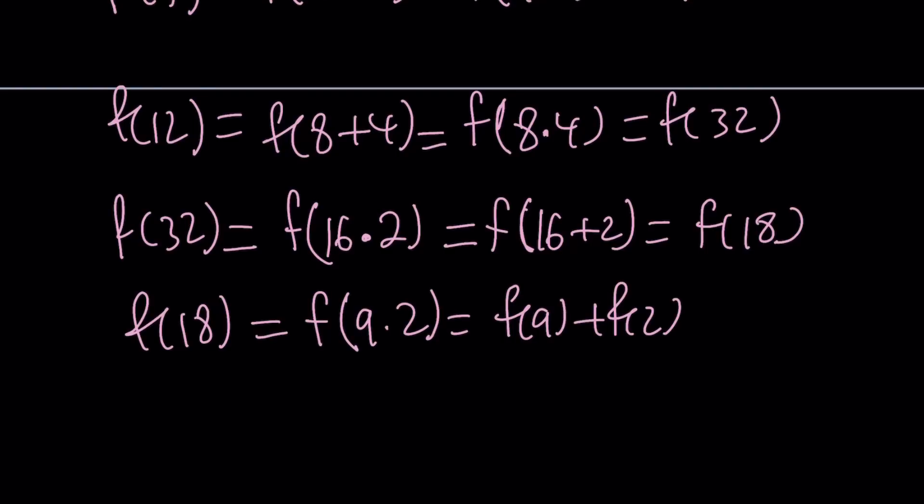Why? Okay. That was wrong. Never mind. I messed up. F of 9 times 2 is the same as F of 9 plus 2. I got too excited. And F of 9 plus 2 is just F of 11.